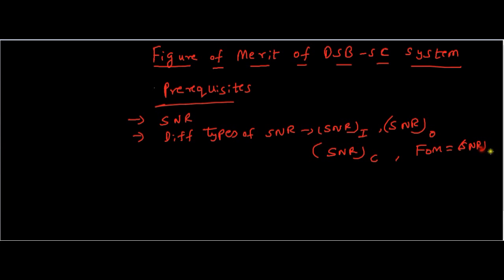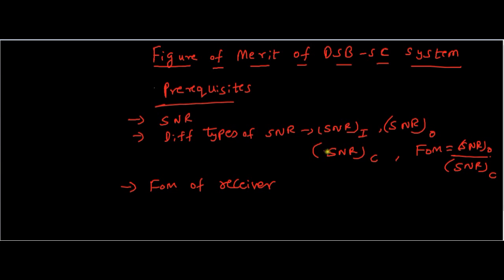The definition of Figure of Merit, which we studied in the previous video, is SNR of Output divided by SNR of Channel. This figure of merit is defined for the receiver — always remember this. So these are the prerequisites. We will apply this knowledge to the DSB-SC system, understand how DSB-SC works again, calculate SNR of output and SNR of channel, and then define the figure of merit of the DSB-SC system.